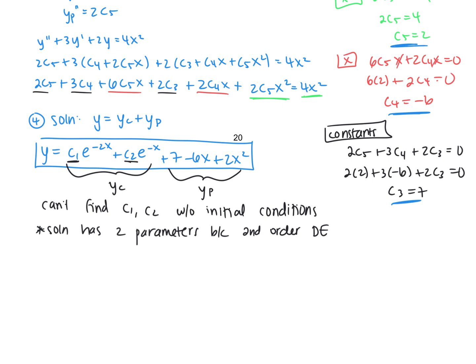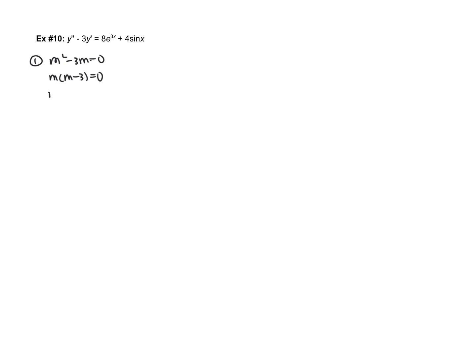Let's look at one more example — a non-homogeneous equation. Try this one on your own before continuing. For the homogeneous part, factoring gives roots 0 and 3, so the complementary solution is c₁ + c₂e^(3x).